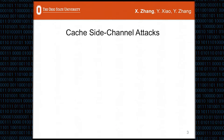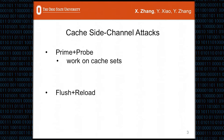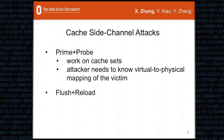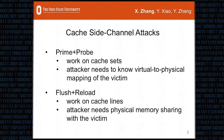Among all cache side-channel attacks, the two most famous ones are Prime+Probe and Flush+Reload. In a Prime+Probe attack, the attacker and victim share the same cache sets in a set-associative cache, and the virtual-to-physical mapping of the victim is assumed to be known to the attacker. Flush+Reload works on cache lines and requires that the attacker and victim share the same physical memory. In our paper, we focus on the Flush+Reload attack.